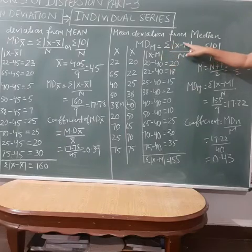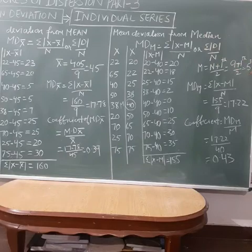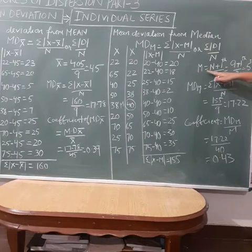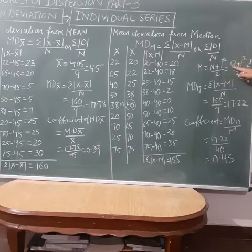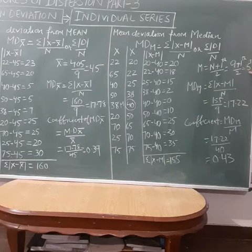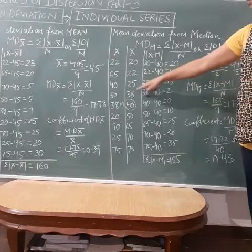Now the series is arranged. We need to find the median first, since we already have x but not the median. To find the median in an individual series, we apply the formula: median position = (n + 1) / 2. The number of observations is 9, so this is (9 + 1) / 2 = 5th term.